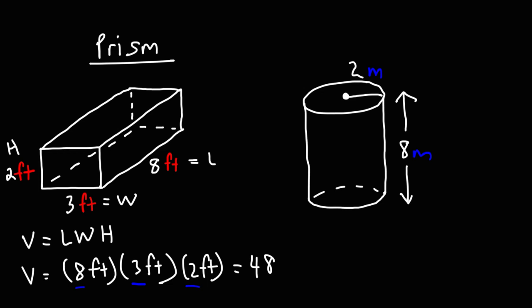Now when dealing with volume, the units are always cubic units. Notice that we're multiplying units of feet 3 times. If you were to multiply x 3 times, this would equal x to the third power, because you would add up the exponents. 1 plus 1 plus 1 is 3. So if you multiply units of feet 3 times, then the unit becomes cubic feet, or feet to the third power.